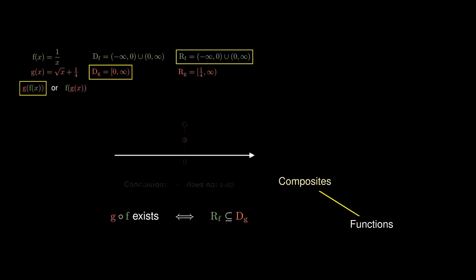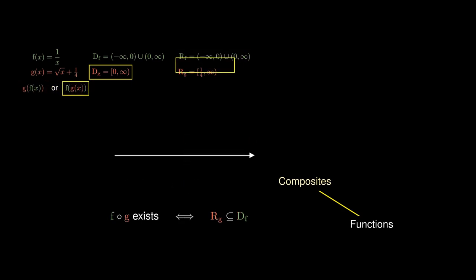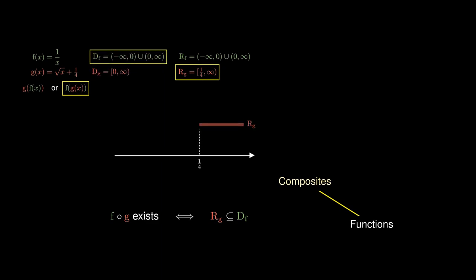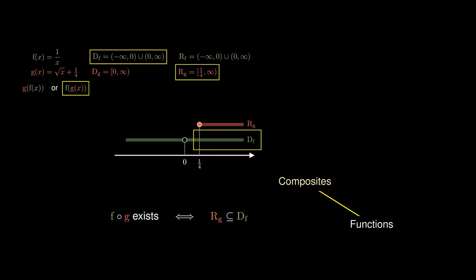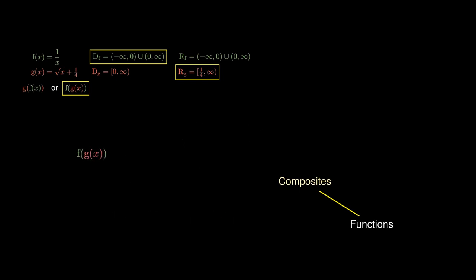On the other hand, we can check for the existence of f of g of x by comparing the range of g with the domain of f on a number line. Since the entire range of g lies inside the domain of f, we can say that the composite function f circle g must exist. We can then calculate a formula for f of g of x by writing f of g of x using the formula for f in terms of g of x, and expanding the expression for g of x. The domain of the composite function equals the domain of the inner function, which is the non-negative real numbers.